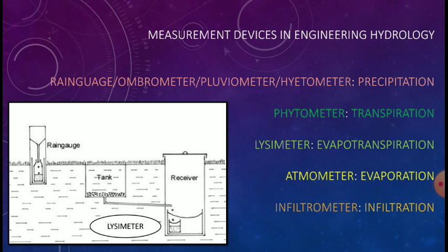First one is weighing bucket type, second one tipping bucket type, third one float or siphon type, fourth one is radar measurement. Non-recording rain gauges are of two types: Symons rain gauge and IS rain gauge, that is Indian Standard rain gauge.